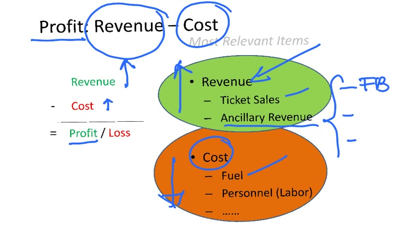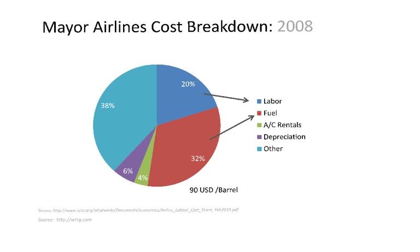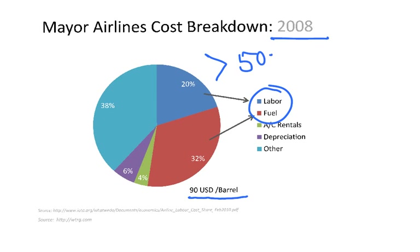The two most important cost items are fuel and labor. These two main items — labor and fuel — are going to change depending on the country you are in and also on the oil price. If we look at 2008, with an oil price of $90 USD per barrel, then labor and fuel cost on average for the whole industry accounted for more than 50%, with fuel being the largest cost at 32%.